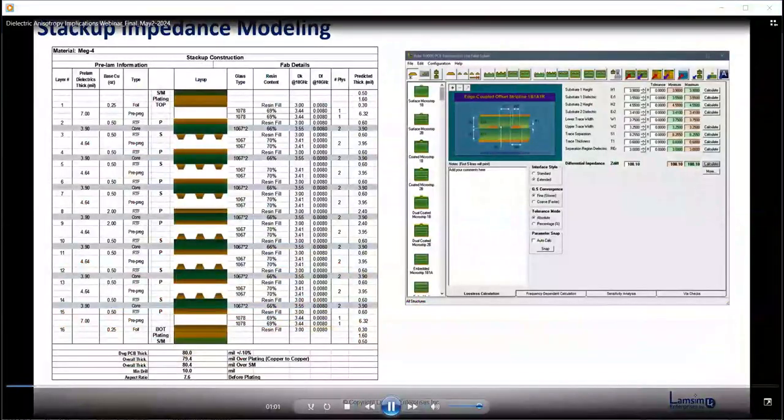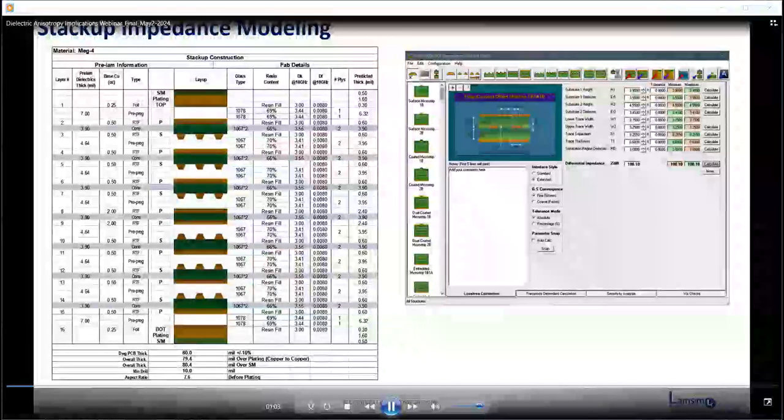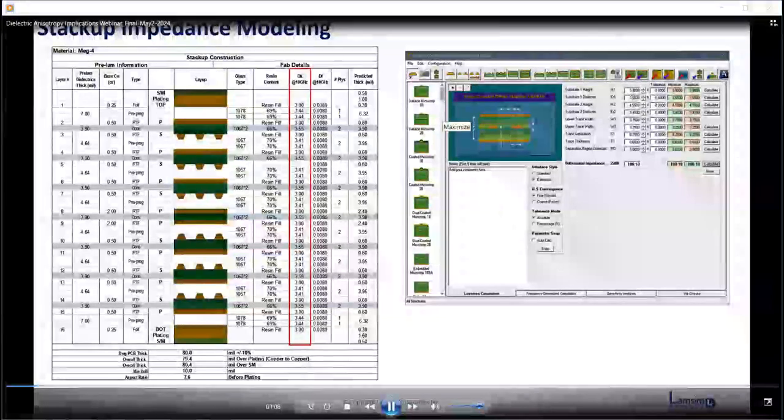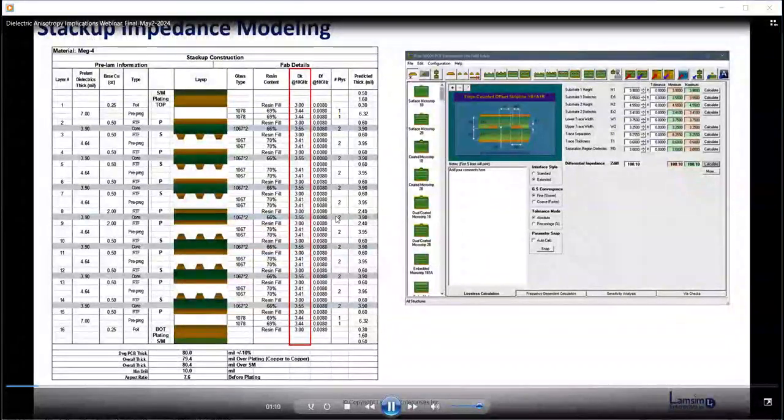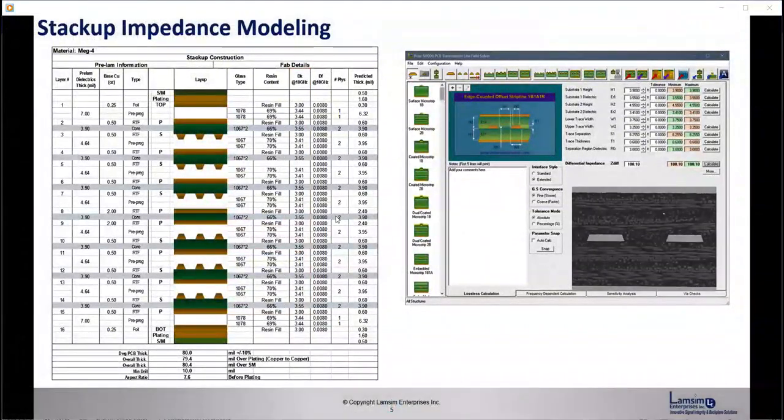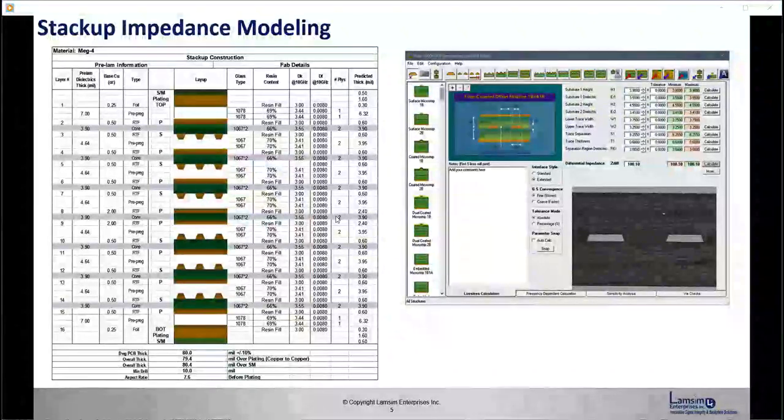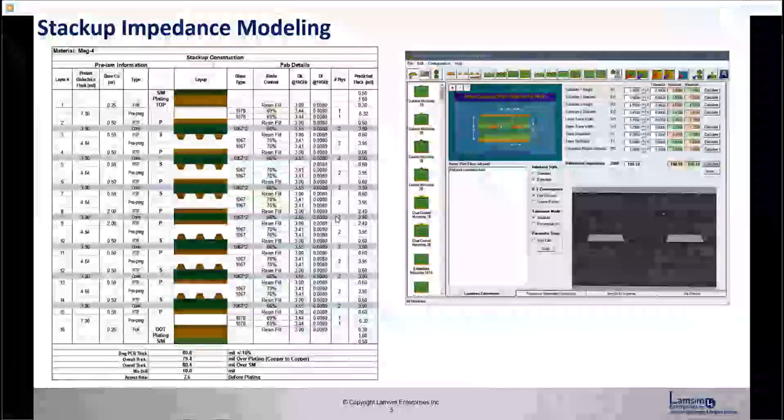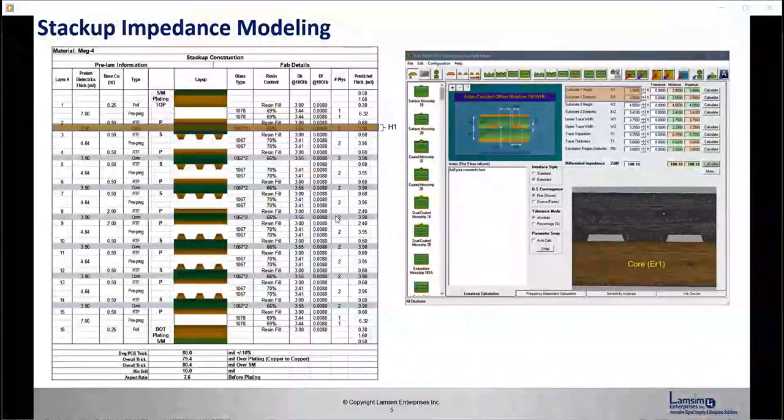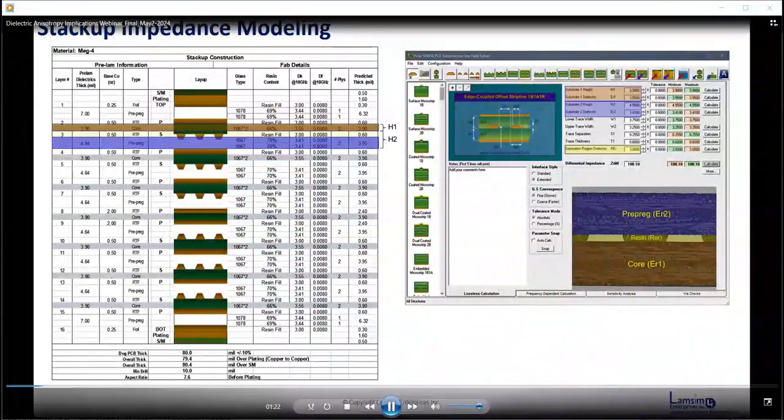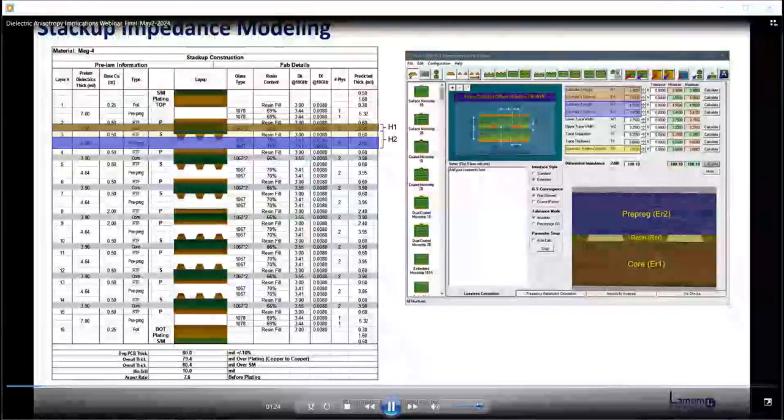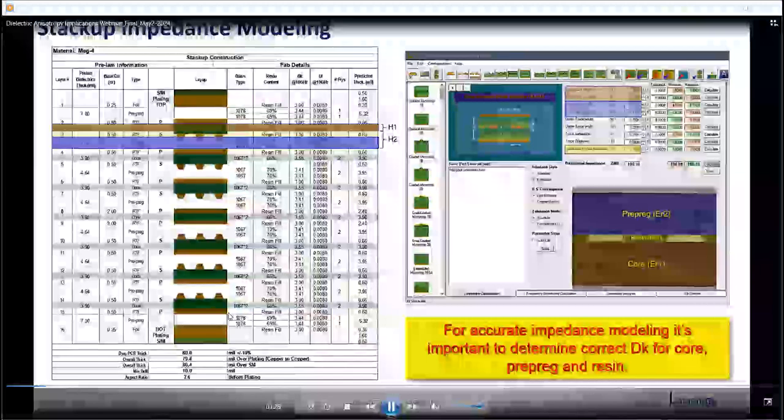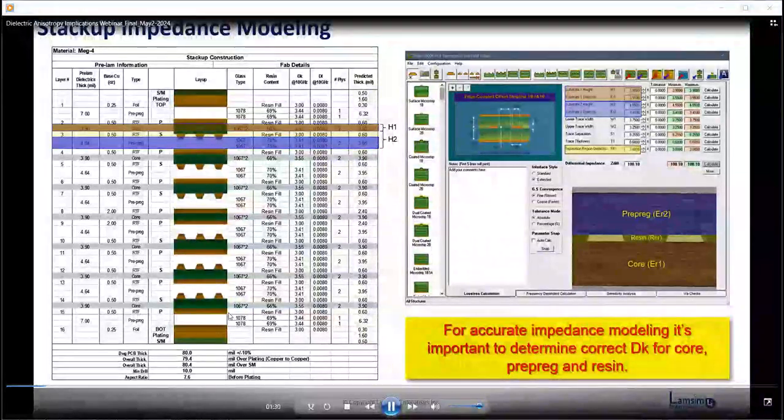In the process of designing a PCB stackup, it's important to get accurate dielectric material properties from reliable sources. And one of the most important parameters is DK. For a typical differential pair stripline structure, there are generally three different layers of dielectric: the core layer, the prepreg layer, and resin layer between the traces. And often all have different DK values. So you'll need to get the right numbers for accurate impedance modeling.